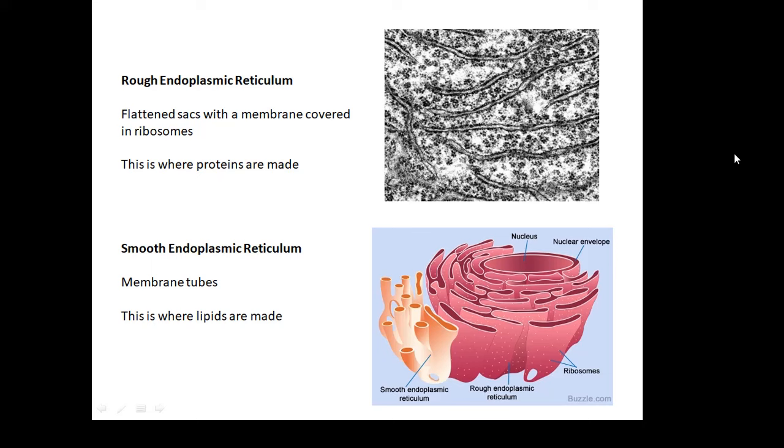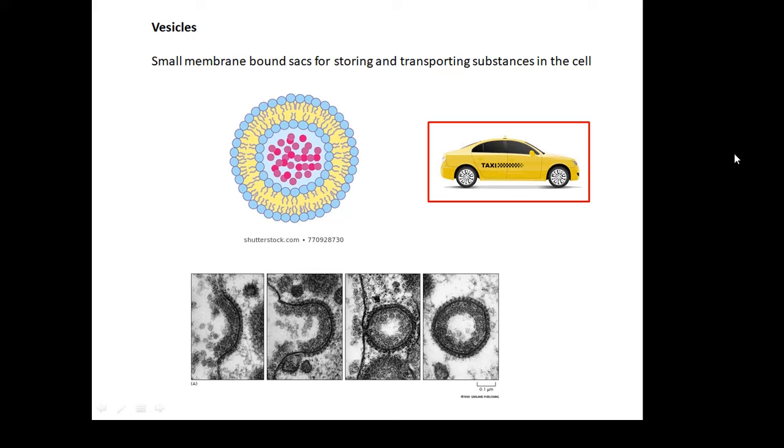Vesicles. These are like little taxis that carry stuff around the place. It's like a little ball, and it's a small membrane-bound sac for storing and transporting substances in the cell. These little balls, these taxis called vesicles, carry stuff around.